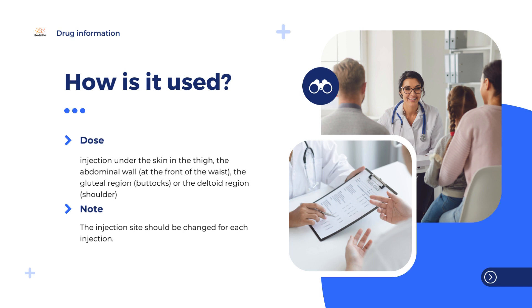Diabetes is a disease in which the body does not produce enough insulin to control the blood glucose, or when the body is unable to use insulin effectively. Actrophane is a replacement insulin, which is very similar to the insulin made by the pancreas.